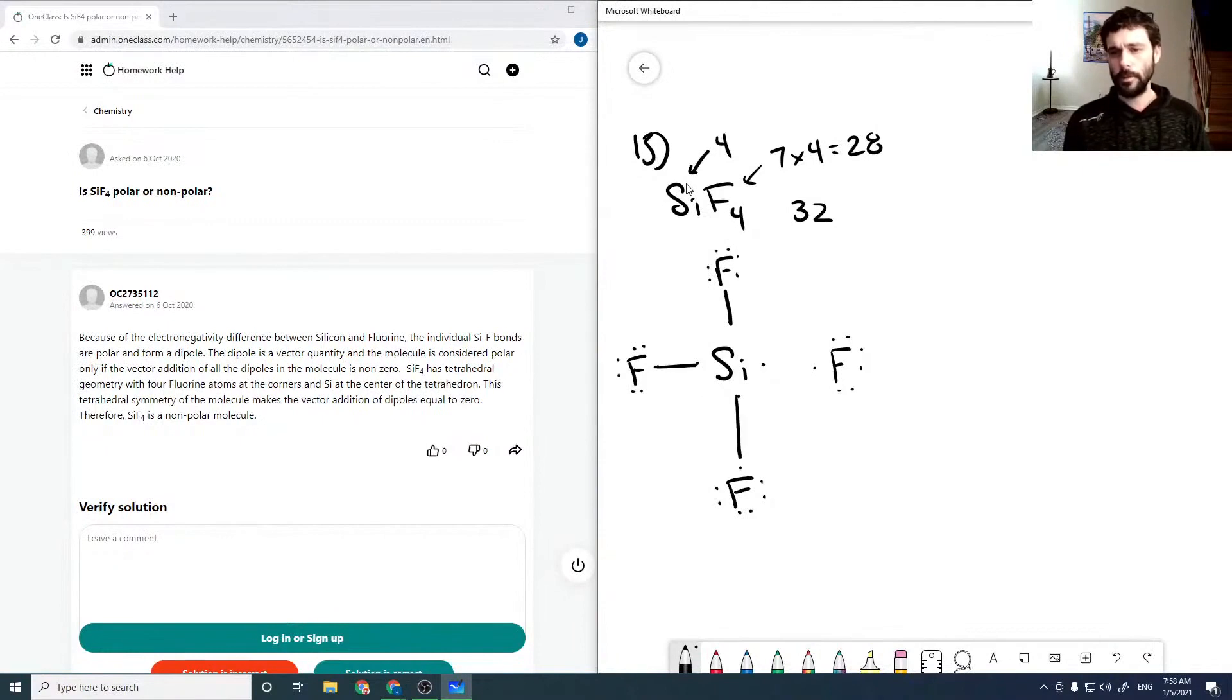Our molecular structure would look like this. We're using wedges to show that they're coming out of the page and dashes to show that they're going into the page. And so this is a symmetric molecule,